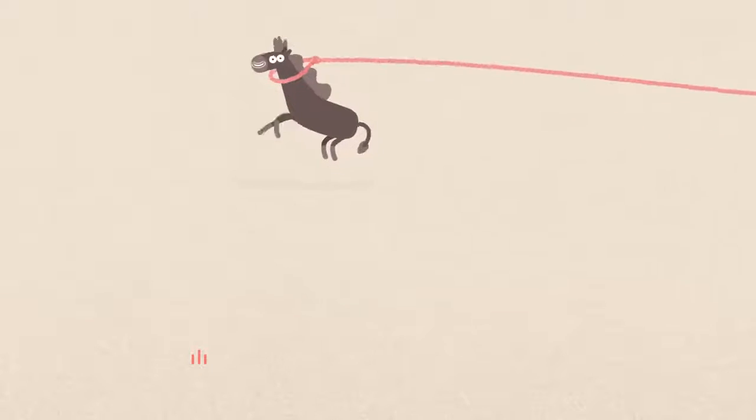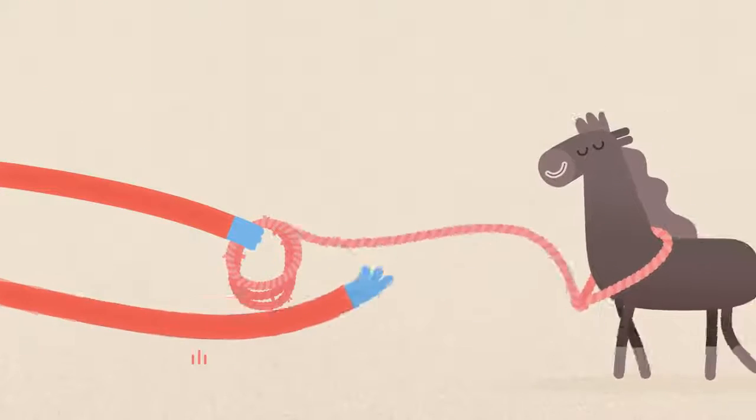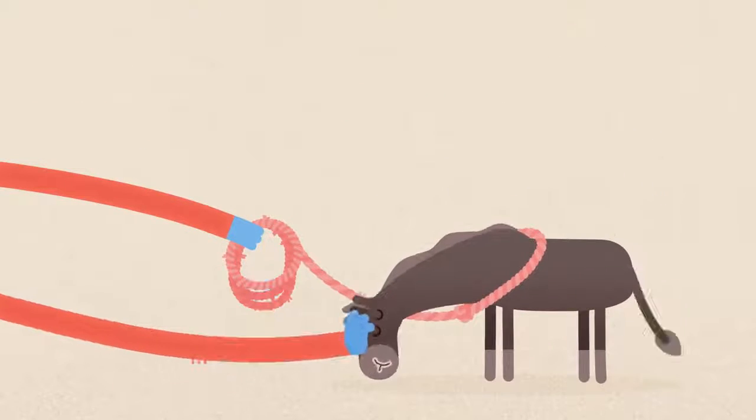The horse runs around feeling like it's got all the space in the world. But very slowly, the rope's brought in, and the horse adjusts to this feeling until it comes to a natural place of rest.